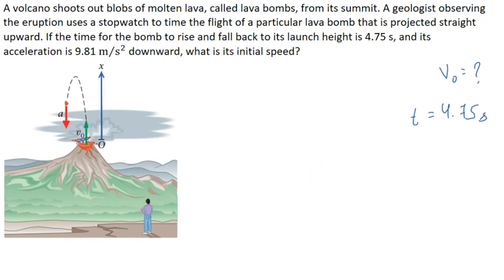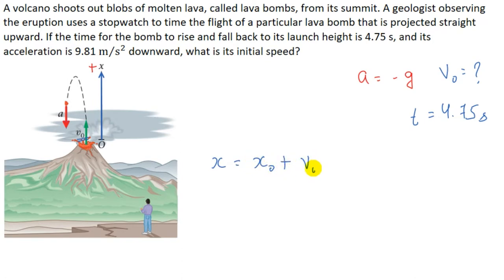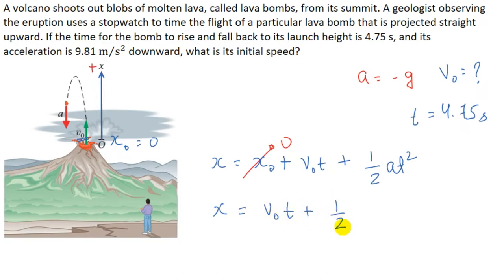We take the upward direction as positive, so the acceleration is negative g. We use the equation of motion: x = x-naught + v-naught·t + ½a·t². Since the initial position x-naught equals 0, we write x = v-naught·t − ½g·t². The final position is also at the origin, so x = 0, giving us 0 = v-naught·t − ½g·t².